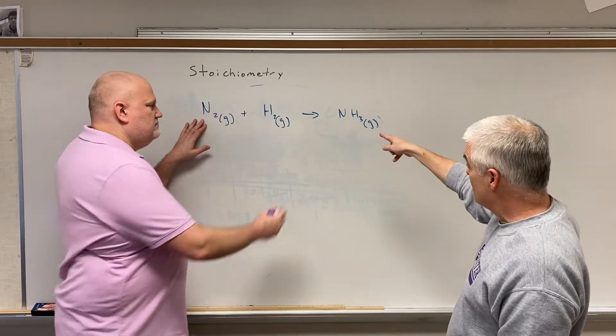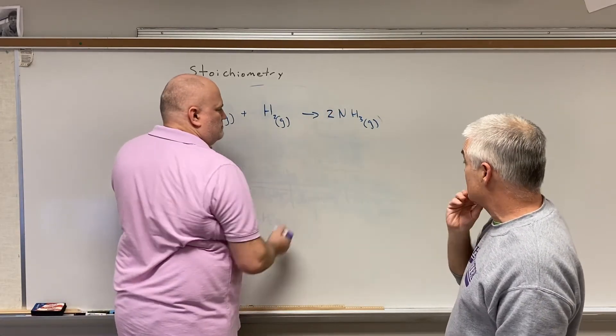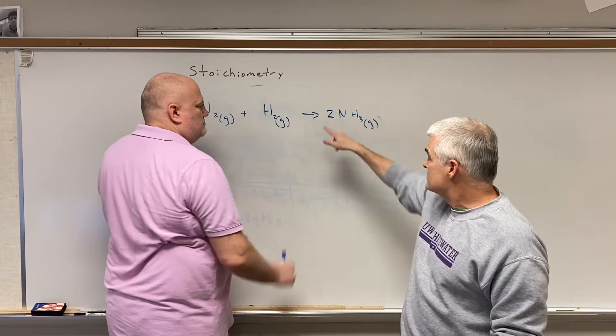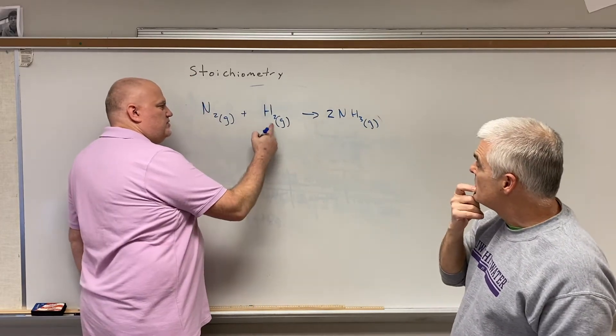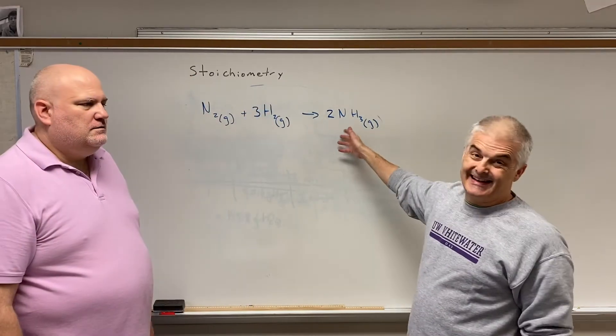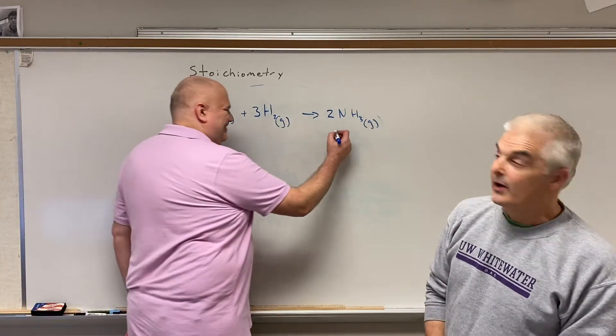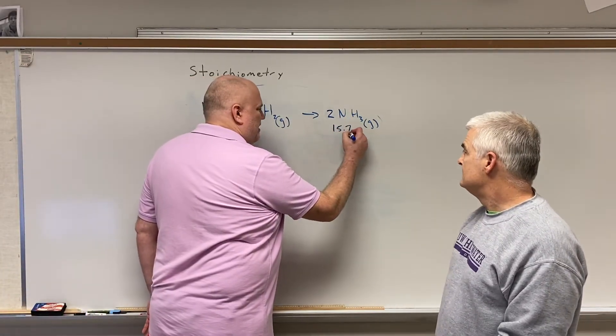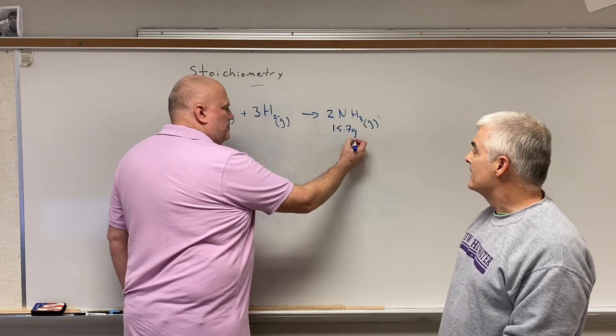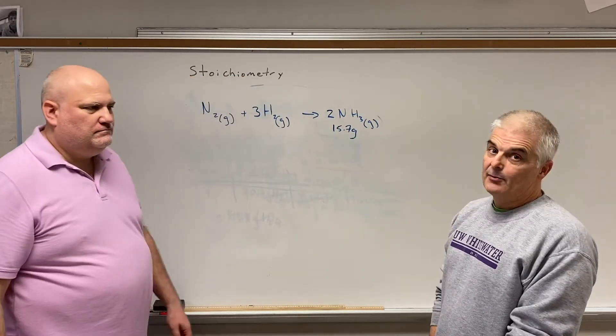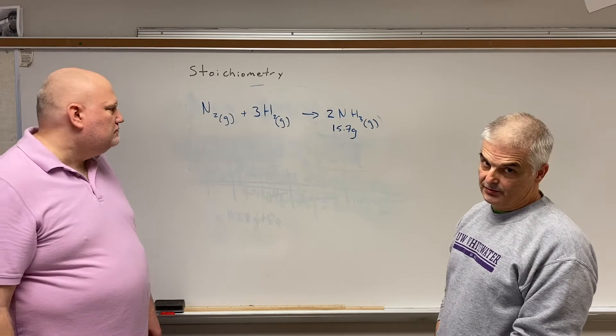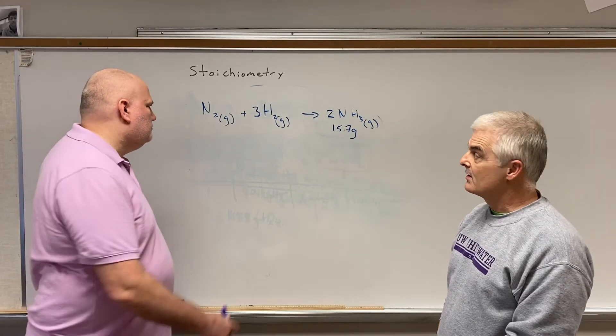So we've got two N's. We've got one N. So we can put a two there and fix it, I think. But that gives me what H's? Six H's there. So I'm going to need three there. So let's say we've got 15.7 grams of ammonia. I'm going to put it here just because I don't want to write it out here. Yeah, yeah, yeah. And now I want to know is how many molecules of hydrogen gas are formed?